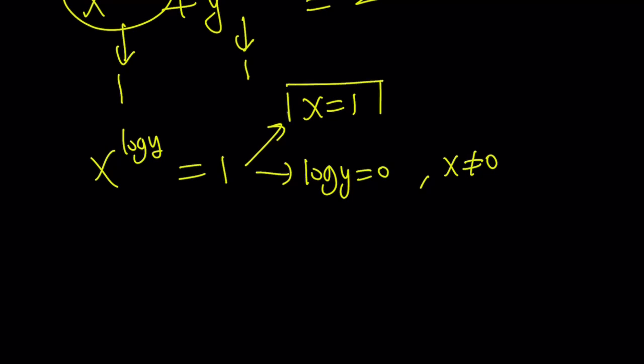So x equals 1 is a good one. But what about log y equals 0? If log y is equal to 0, this implies that y is equal to 1.